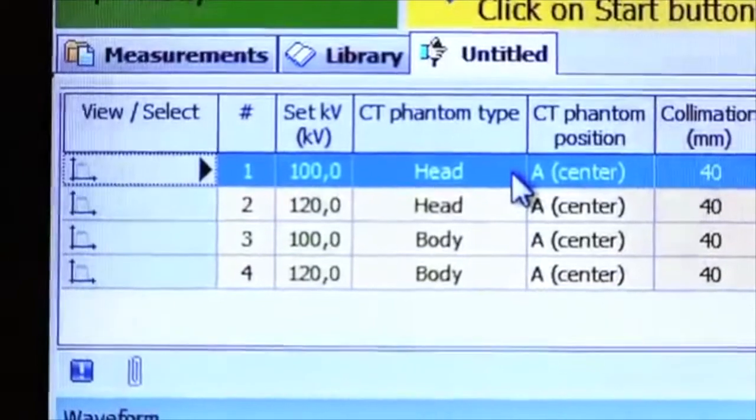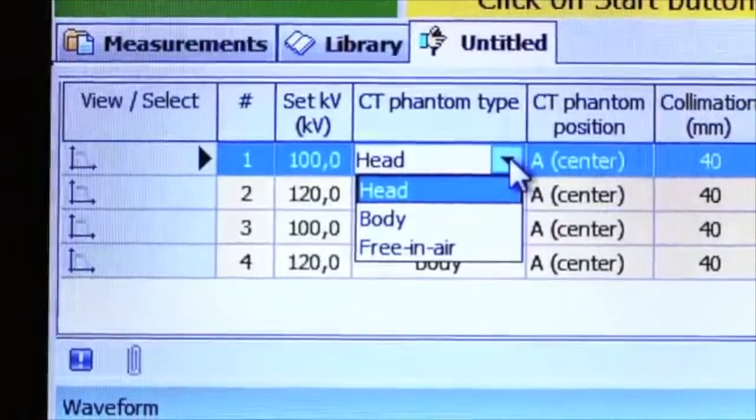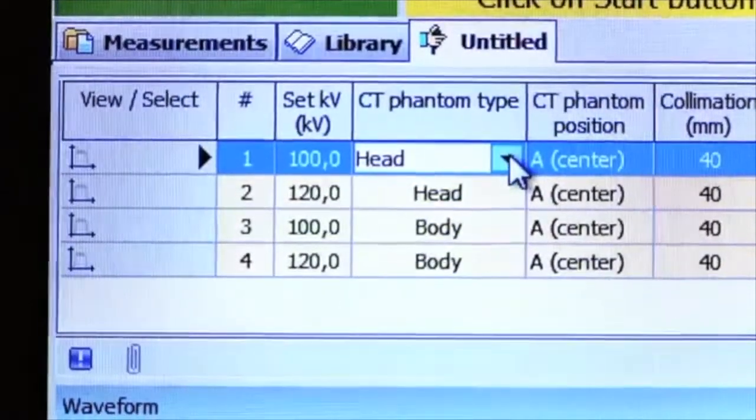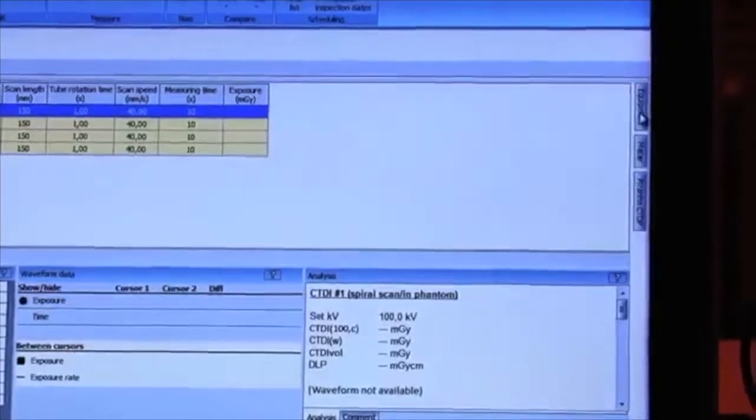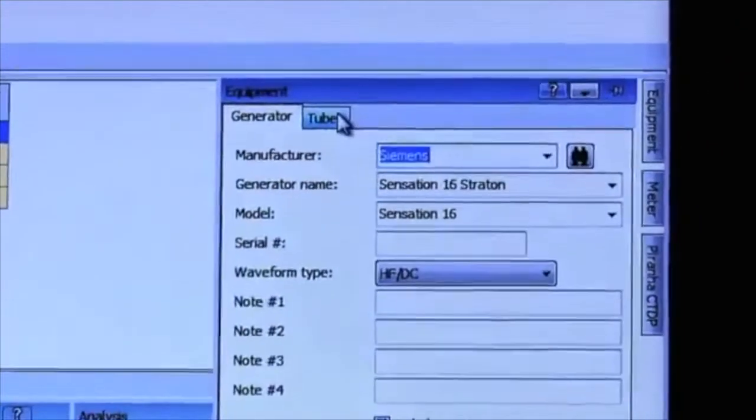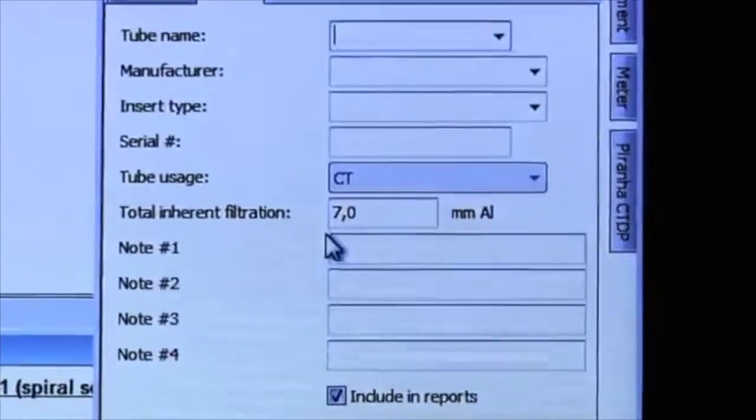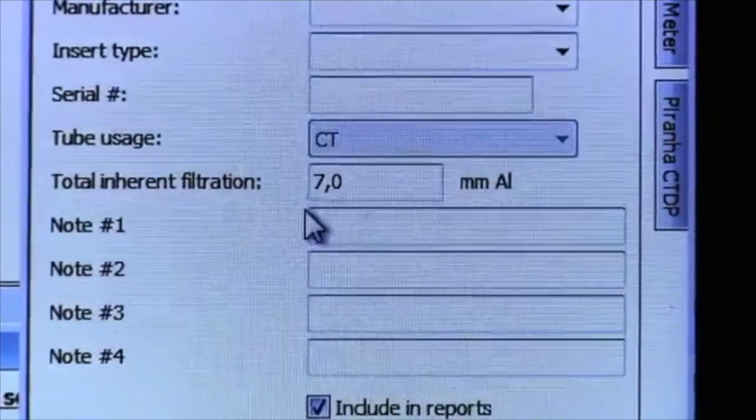You must also select the correct measuring mode. In this case, a measurement in a head phantom. If you know the total inherent filtration, you can add that too, or you can use the default value of 7 mm of aluminum.